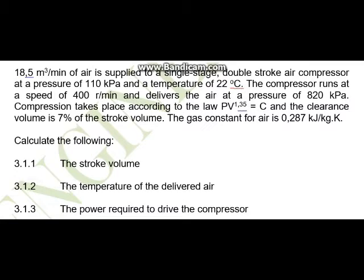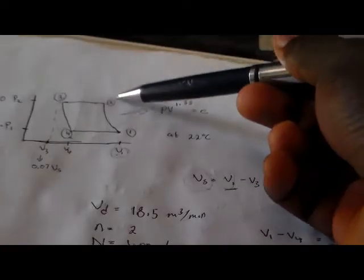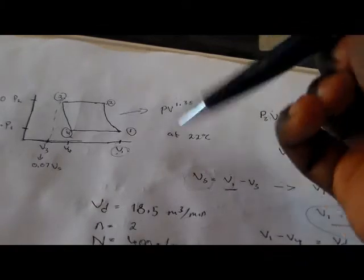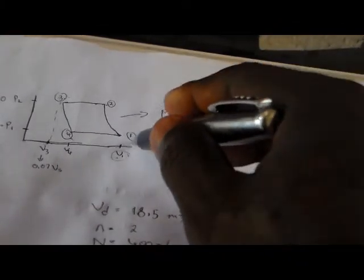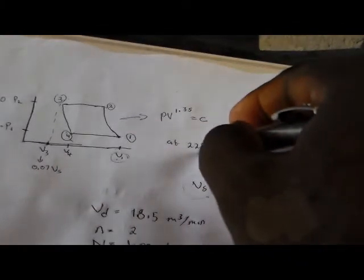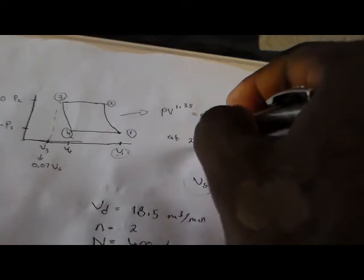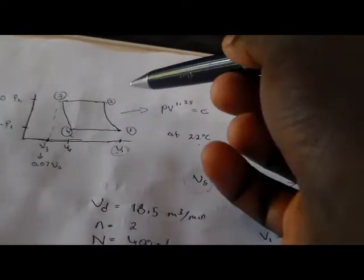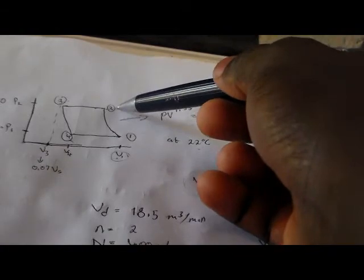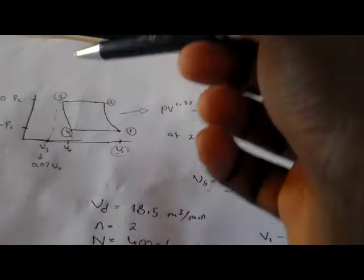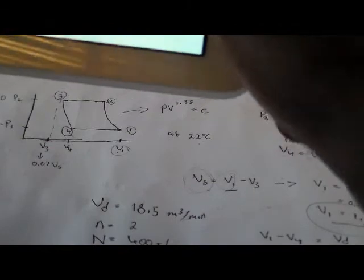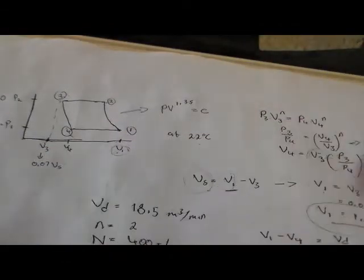Now let's conclude question number two. Question number two says: conclude the temperature of the delivery. So the temperature of the delivery is temperature number two. Temperature number one, our initial temperature, was 22 degrees Celsius. Now we have to calculate temperature number two, so we're going to use the formula for T2.